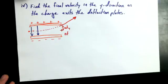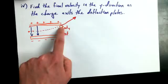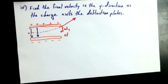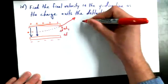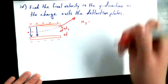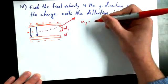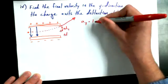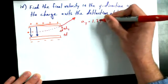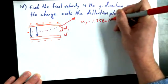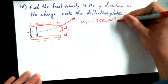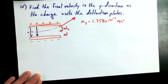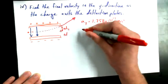We want to find out what the exit velocity is in the Y direction when it gets to this other side. So again, following the rules of kinematics in the Y direction, we know the acceleration in the Y direction to be 1.758 times 10 to the power of 13 meters per second squared upwards. That's for the whole time that it's traveling between these two plates.